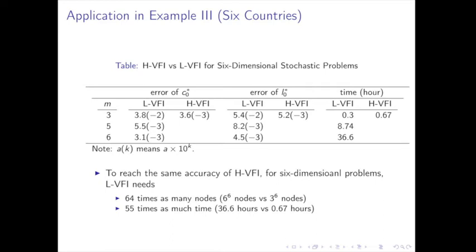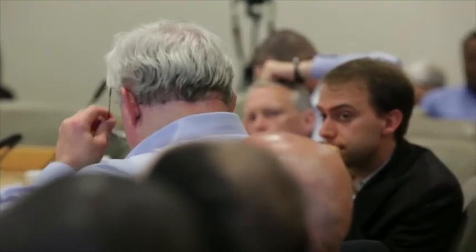A question arises: in partial equilibrium, not only is the value function concave but the consumption function is concave as well. Could we use policy function iteration and impose shape on the consumption function? This is a finite horizon problem, so there is no policy function iteration — the policy function changes over time. However, yes, we could also impose shape constraints on the consumption function during value function iteration.